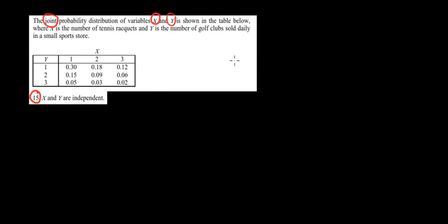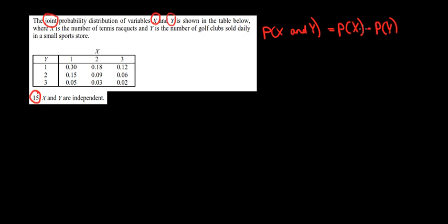What does it mean to have two variables independent? That means the probability of x and y must be equal to the probability of x times the probability of y for every possible combination. We can see that we have nine combinations between x and y in this table, so we have to check this relationship nine times.